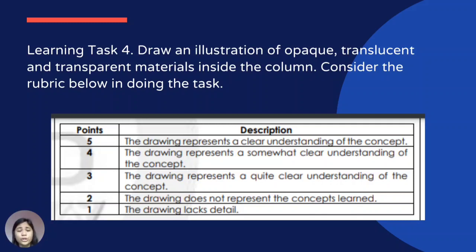For Learning Task 4, draw an illustration of opaque, translucent, and transparent materials inside the column. Consider the rubric below: five points — the drawing represents a clear understanding of the concept; four points — the drawing represents a somewhat clear understanding; three points — the drawing represents a quite clear understanding; two points — the drawing does not represent the concept learned and the drawing lacks detail.